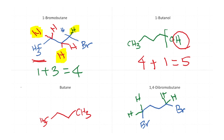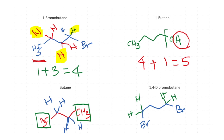For butane, the two terminal methyl groups are identical — replacing a hydrogen on either gives 1-chlorobutane. For the two internal CH₂ groups, replacing a hydrogen on either gives 2-chlorobutane. So those two CH₂s are also identical. Therefore, the number of signals expected is one for the methyl groups and one for the methylene groups, giving two signals total.